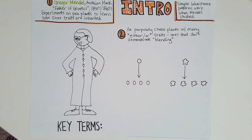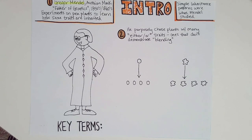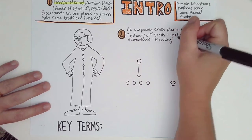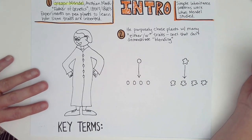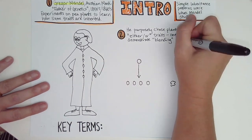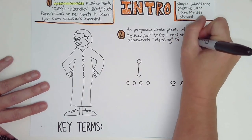Examples of blending include co-dominance, where both forms of a gene are equally expressed. Blood typing can be like that, but that's not what Mendel was studying. So we're not talking about those more complex patterns today — only traits that don't demonstrate blending.